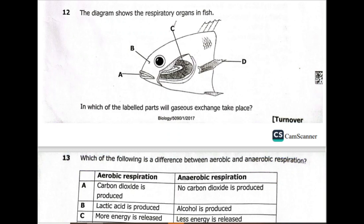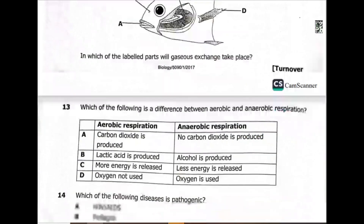Now let's move on to question 12. The diagram shows the respiratory organs in fish. In which labeled part will gaseous exchange take place? The answer is C — the gills — where the exchange of gases occurs.